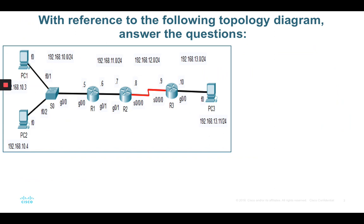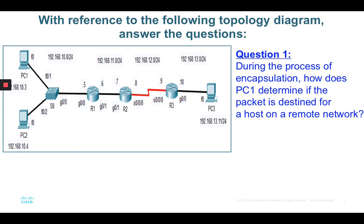Let's answer these questions. With reference to the following topology diagram: during the process of encapsulation, how does PC1 determine if the packet is destined for a host on a remote network? In other words, how do you know whether PC1 connecting to PC3 belongs to the same network or a different network? The first method is using broadcast domains — you circle the broadcast domain and you'll know whether they belong to the same network. The second method, if the question gives only IP addresses, you have to perform the AND operation.